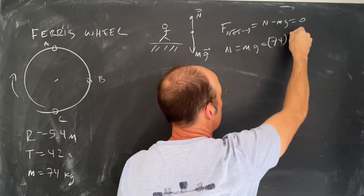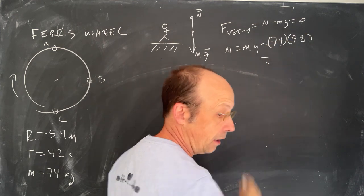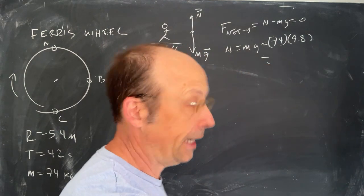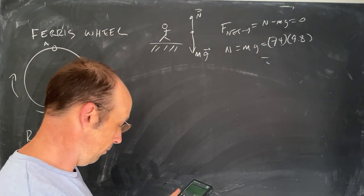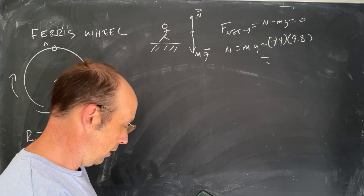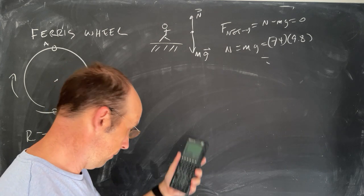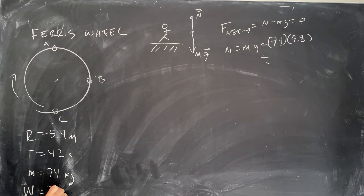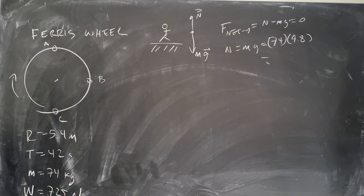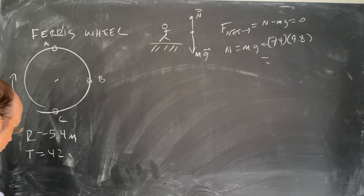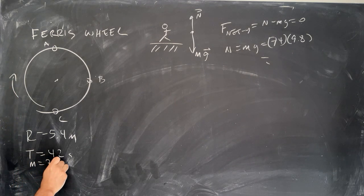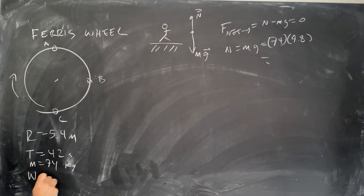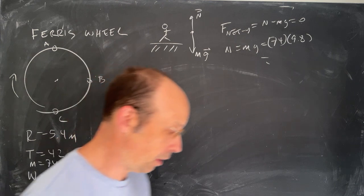Let's calculate that. It's 74 kilograms times 9.8, and so I get an apparent weight of, putting in my calculator, somewhere around 725 newtons. M equals 74 kilograms, weight apparent 725 newtons. Just as a comparison so we can compare that later.